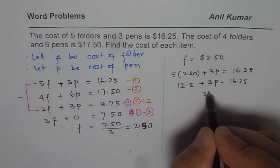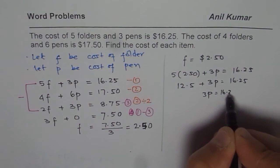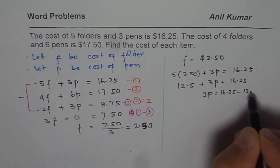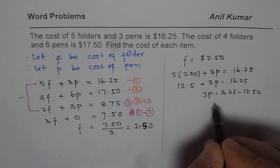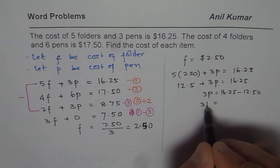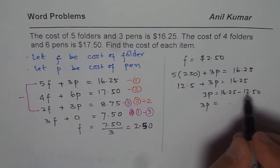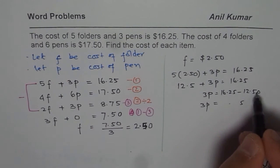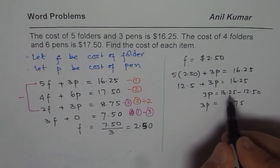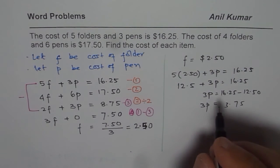So 12.5 plus 3P equals 16.25. So we get 3P equals 16.25 minus 12.5. May write 0 here. So we get 3P equals 25 take away 50 will be 75. You borrowed 1 from here. So 5 take away 2 is 3. 3.75.